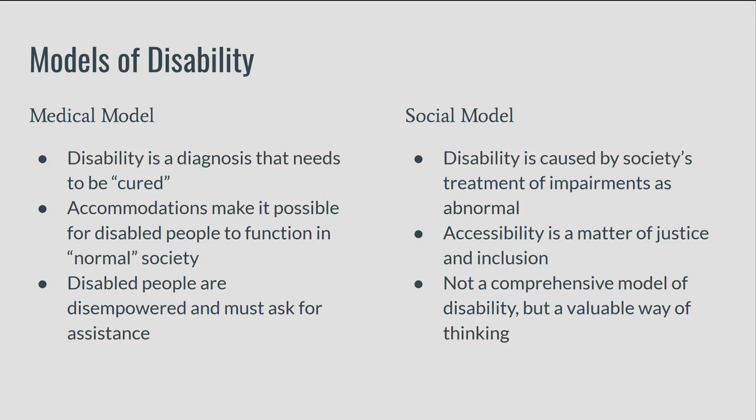Under the social model of disability, it is societal structures that truly disable people with impairments. Societal attitudes and barriers are the primary things holding disabled folks back, not their impairments themselves. The social model believes that society should be organized in a way that allows all people independence and opportunity, and accessibility for all is a matter of justice and equity. Disabled people should not be adapting to society — society should be structured to be more inclusive for everyone.